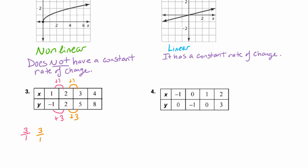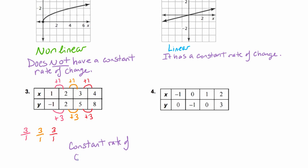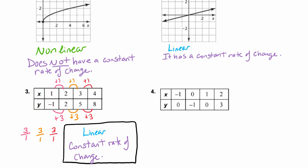Finally, when we move from x = 3 to 4, we have an increase of 1, and from y = 5 to 8 we have an increase of 3, giving us a rate of 3 to 1. Now we compare our three rates — do they match? They do, and so that tells us we have a constant rate of change, which tells us we have a linear function here.